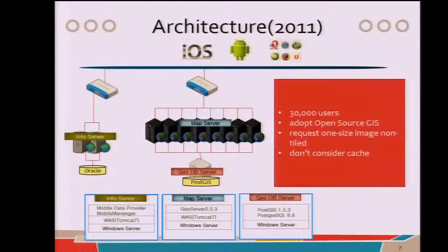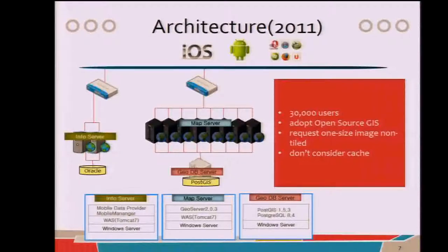This is the architecture of 2011. Actually, my company wasn't the one who designed this system. There was a company who originally designed it, but there were lots of problems. As you can see, it is a Windows-based system. There are six GeoServers as map servers and one PostGIS/PostgreSQL as the database. There is no cache server, and the client requests one-size, non-tiled images. So there were lots of problems.